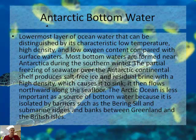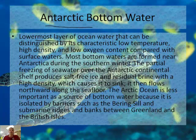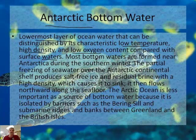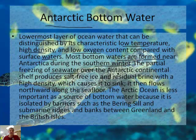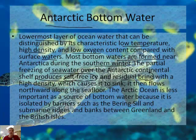The Antarctic Bottom Water is the lowermost layer of the ocean, distinguished by its characteristic low temperature, high density, and low oxygen content compared with surface waters. Most bottom waters are formed near Antarctica during the southern winter — when it's coldest. The partial freezing of seawater in the continental shelf produces salt-free ice, but residual brine with high density causes it to sink. It then flows north along the seafloor.